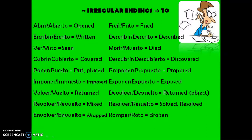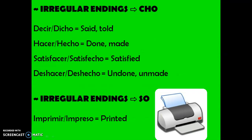Those are the -to irregular past participles. The one you're probably going to have the most trouble remembering is escribir being escrito, because you're not used to escribir being irregular. We also have one that ends in -so: imprimir — impreso — printed.